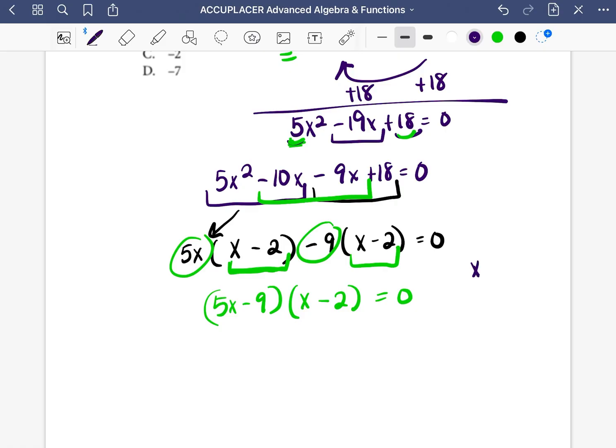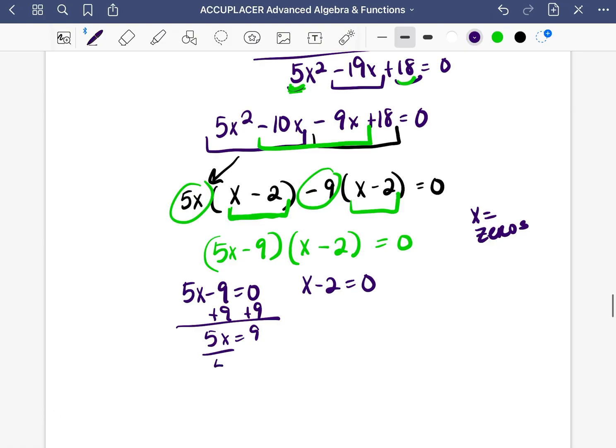Remember, we're solving for what x is equal to, and x is equal to is also called zeros. The reason they're called zeros is because you solve them by setting the equation equal to zero. So we're going to set 5x - 9 = 0 and x - 2 = 0. We're going to add 9 to both sides: 5x = 9, then divide both sides by 5: x = 9/5. Then we add 2 to both sides: x = 2. So the zeros are 9/5 and 2.